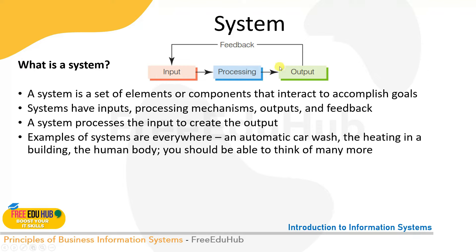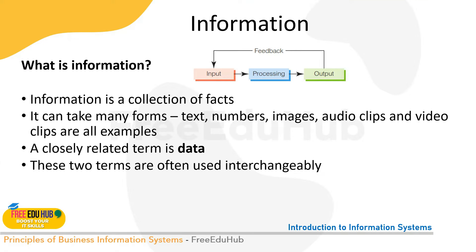Information is closely related to data. Data is usually in a raw form — it's not compiled and cannot produce any results; we cannot make decisions based on raw data. Going back to the student example, a student got eight marks out of ten on a quiz. Every student has data about their own quiz, but you don't know the class average, maximum, or minimum because every student only has their own individual grade.